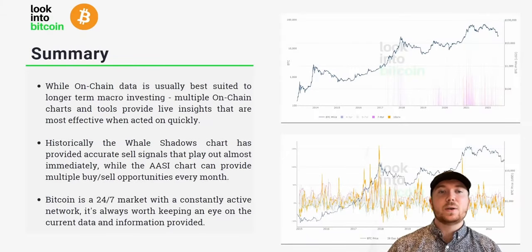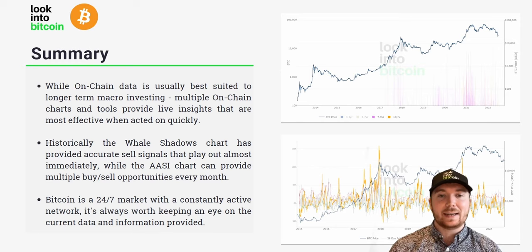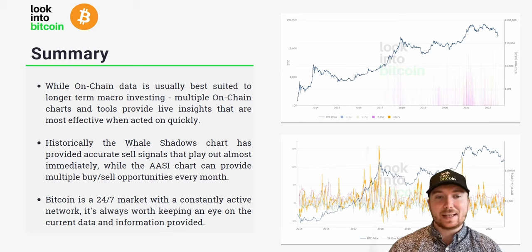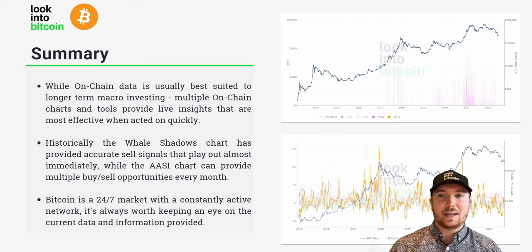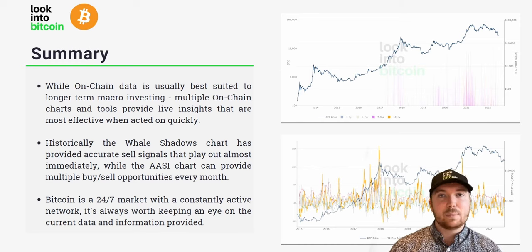To summarize: while on-chain data is usually best suited to longer-term macro investing, multiple on-chain charts and tools provide live insights that are most effective when acted on quickly — such as the whale shadows. If we see a big spike in on-chain movement from large players in the Bitcoin space, this usually indicates that a sell move is coming and it might be best to react immediately rather than waiting for longer-term macro confirmation.